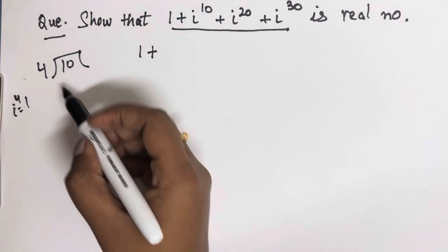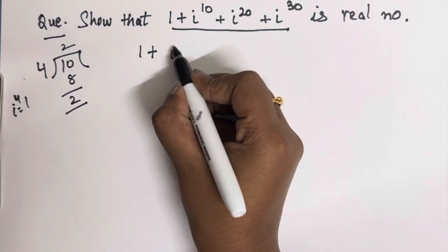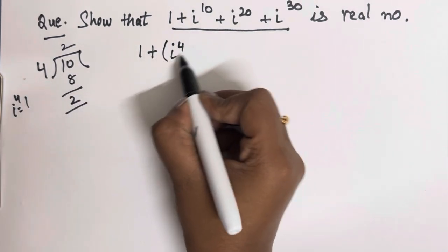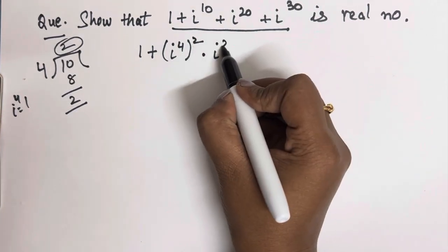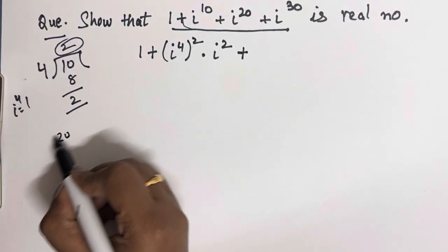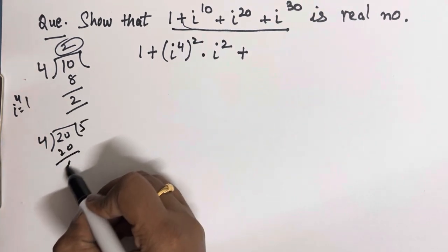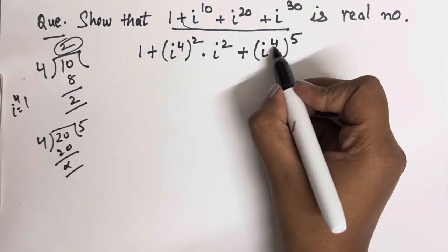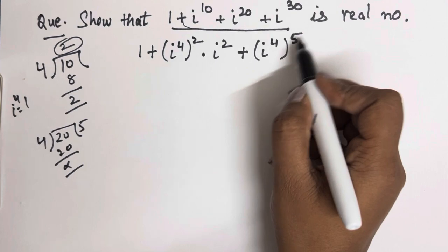So if we divide 10 by 4, we get 2 as the remainder. So we write iota to the power 10 as iota to the power 4, whole to the power 2, into iota to the power 2 (the remainder). Similarly, for iota to the power 20, we divide by 4 and get 5. So we can write it as iota to the power 4, whole to the power 5, since 5 times 4 is 20.